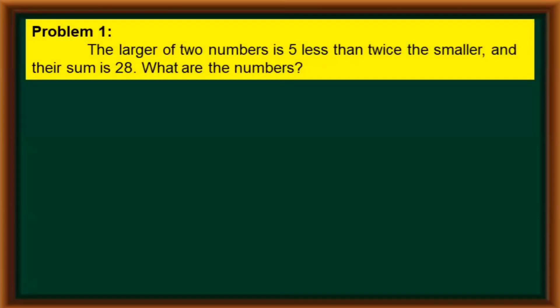Let's look at our first problem. The larger of two numbers is 5 less than twice the smaller, and their sum is 28. What are the numbers?